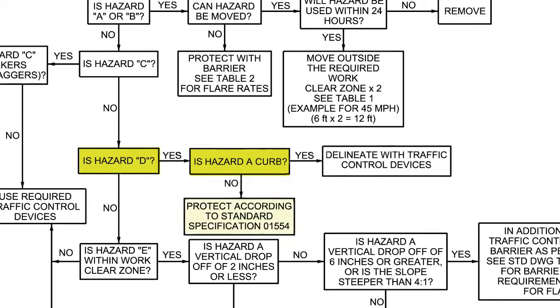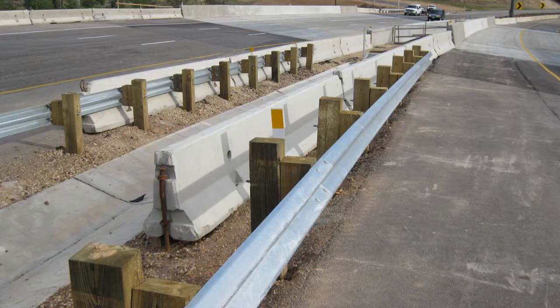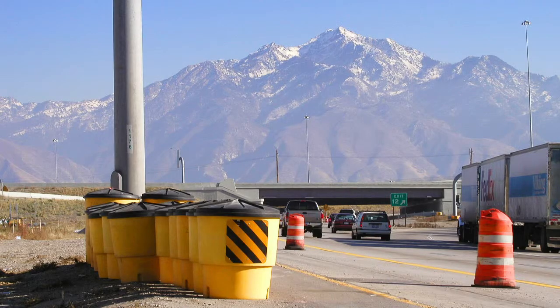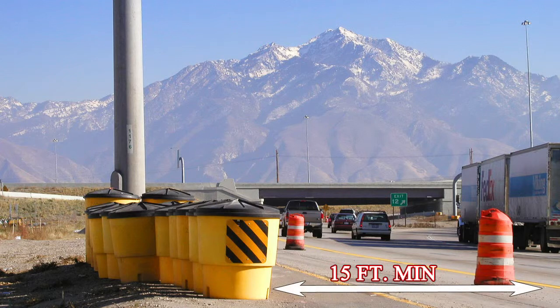If the hazard is not an incomplete curb, then the hazard must be protected according to Standard Specification 01554, which requires the hazard to be shielded within the astral clear zone for approach traffic by installing concrete barrier or other positive protection. In this example, the light pole is protected by a sand barrel array. When using sand barrel arrays, you need to ensure that the edge of the travel lane is located at a minimum 15 feet from the traffic side of the sand barrel array. This information is covered by Standard Drawing CC6.